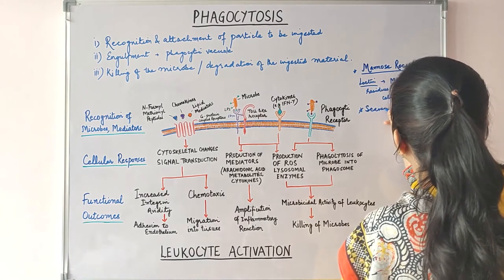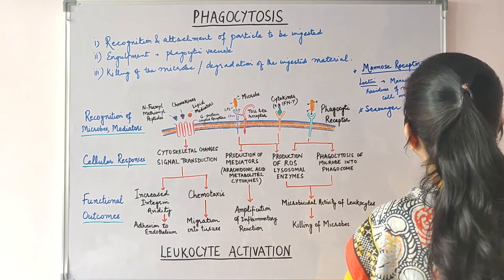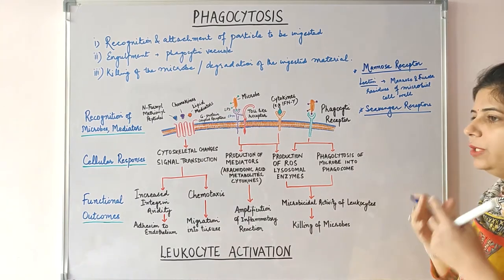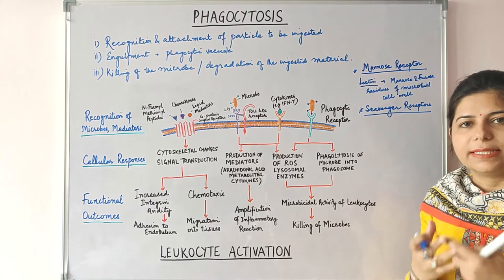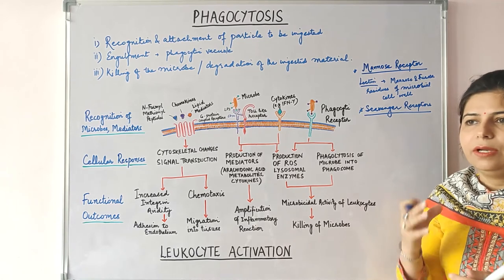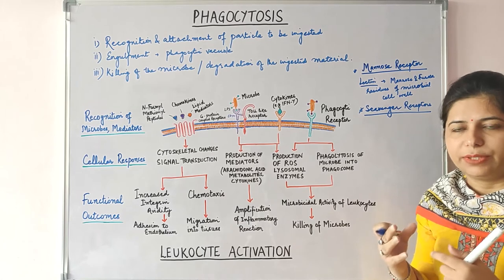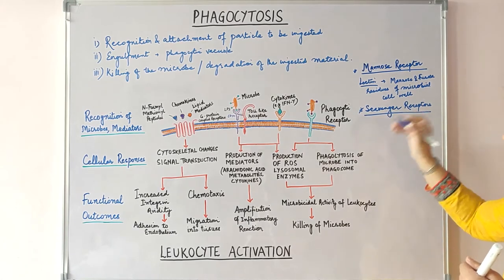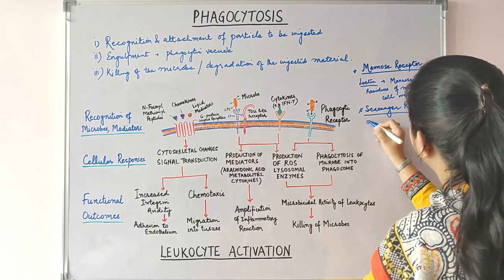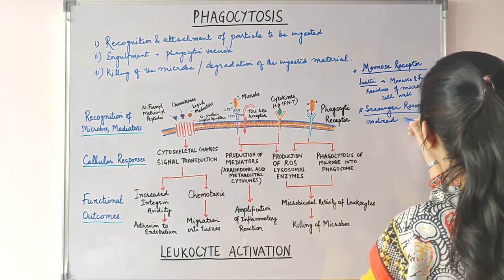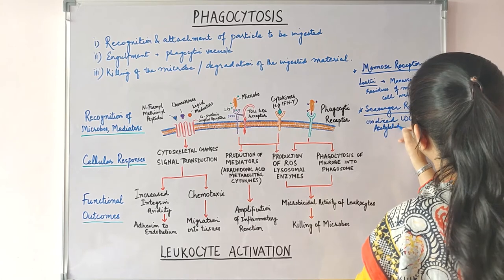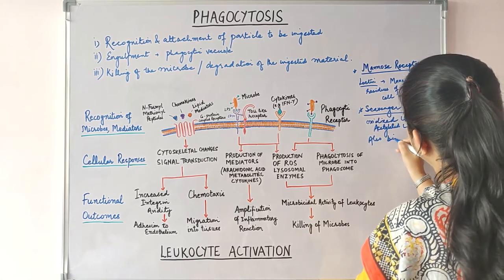Next are the scavenger receptors. These were originally identified as molecules that bind to oxidized LDL and induce endocytosis of oxidized or acetylated LDL, which does not bind to the conventional LDL receptor. But they are also known to bind microbes and initiate the process of phagocytosis.